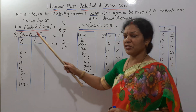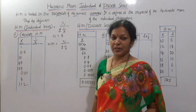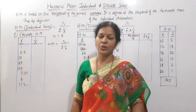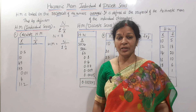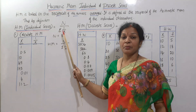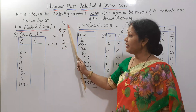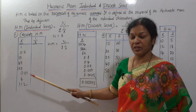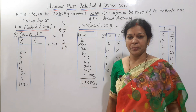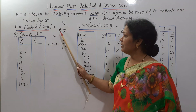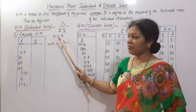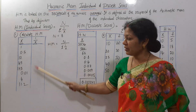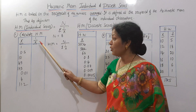Now we have problems to solve. First, in this individual series problem, we have to calculate the harmonic mean. We have only x values — no frequency. This is an individual series. The formula is n by sigma (1 by x). Here n is the number of observations: 1, 2, 3, 4, 5, 6, 7, and 8 — so n equals 8. We calculate 1 by x, the reciprocals, for each item: 1 divided by x.